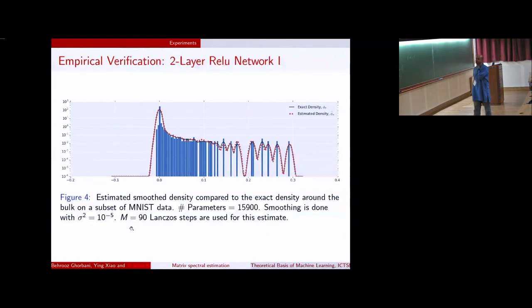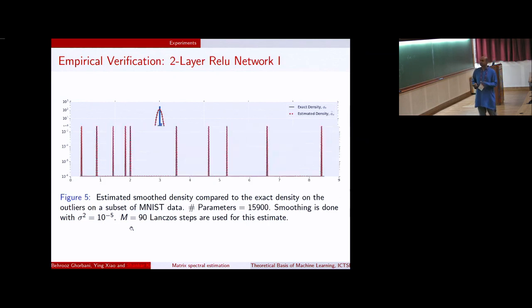Here is a very simple verification of our approach. Here we just took a two-layer MLP for MNIST. We just sampled like 5,000 points of the MNIST data. The number of parameters is about 15,000. And this is the red curve is the estimate. And the black curve, I hope you can see it's right on top of it. That's the exact spectral density. And in this particular setting, we use this bandwidth parameter as 10 to the minus 5, and we do 90 Lanczos steps. So that's the whole thing.